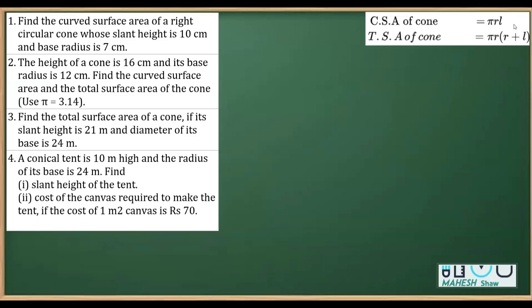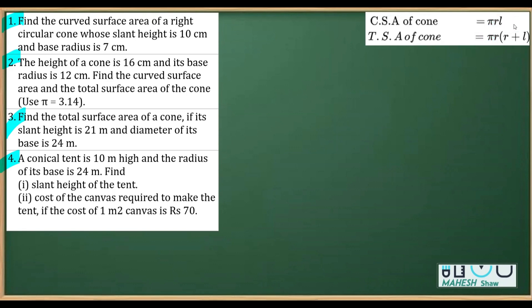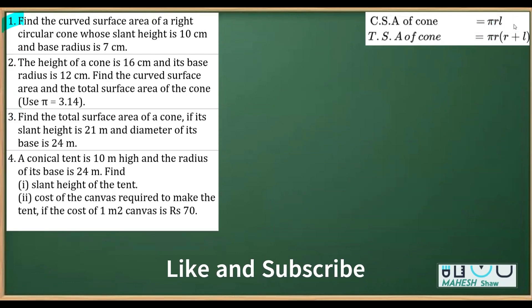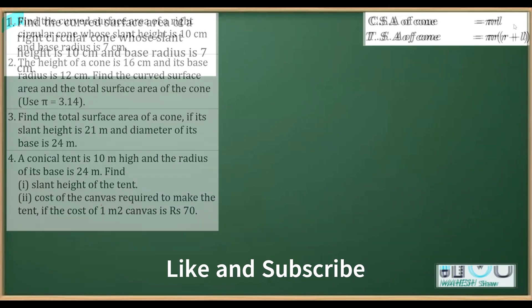In this video we will do four questions based on either curved surface area or total surface area of a cone. We need to remember these formulas: curved surface area is π r l, and total surface area is π r (r + l). Let's begin with the first question.